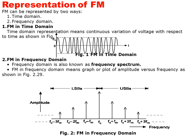If we want to represent the frequency modulated wave, we can do so in two ways: number one is time domain and number two is frequency domain. Time domain representation means a continuous variation of voltage represented against time, as shown in figure one, which is a continuous signal. Frequency domain is known as the frequency spectrum and may have a graph or plot of amplitude versus frequency, as shown in figure two.